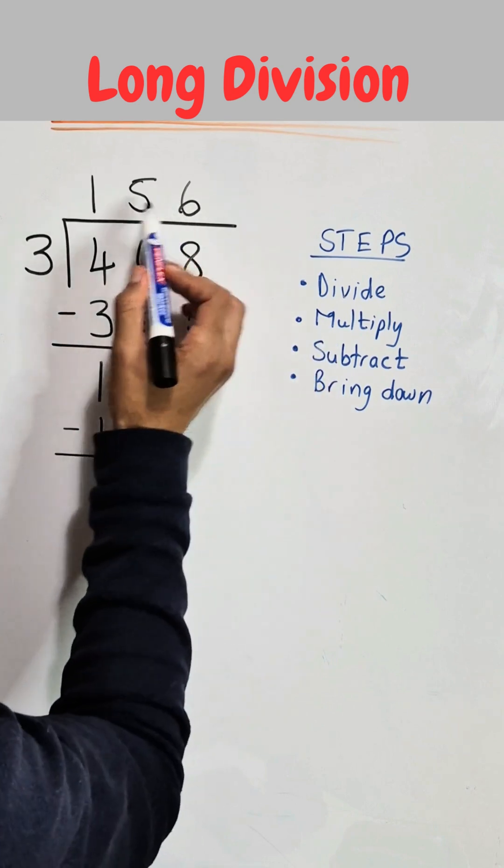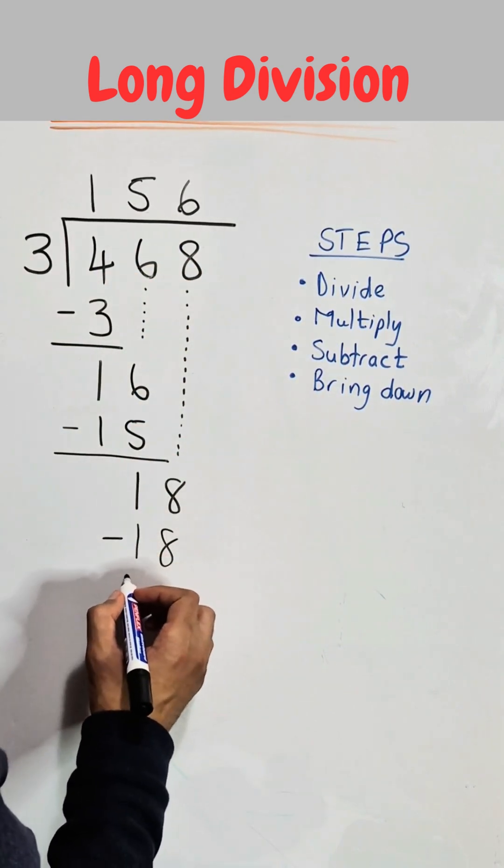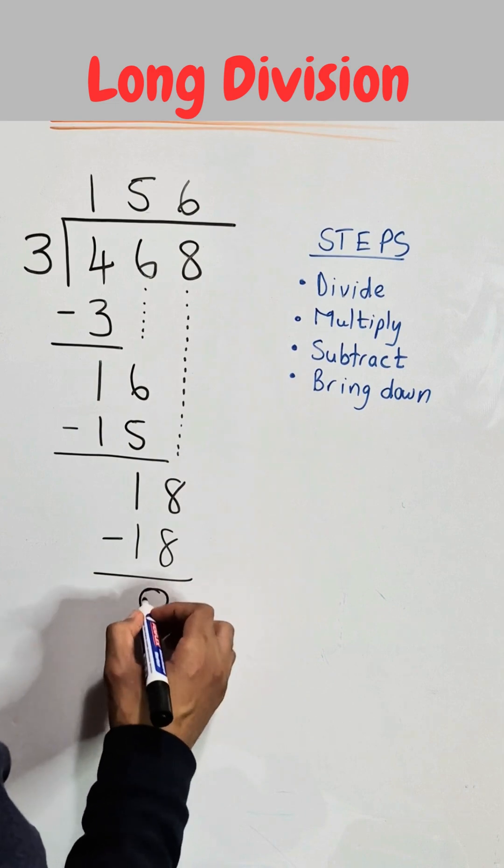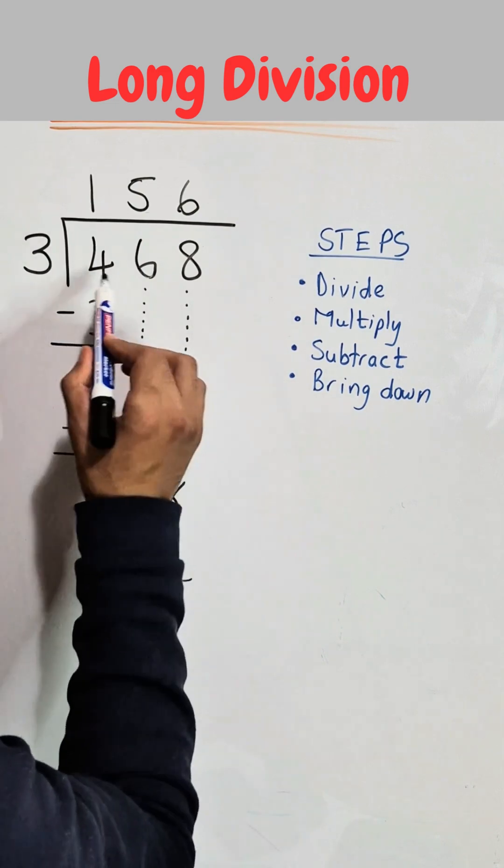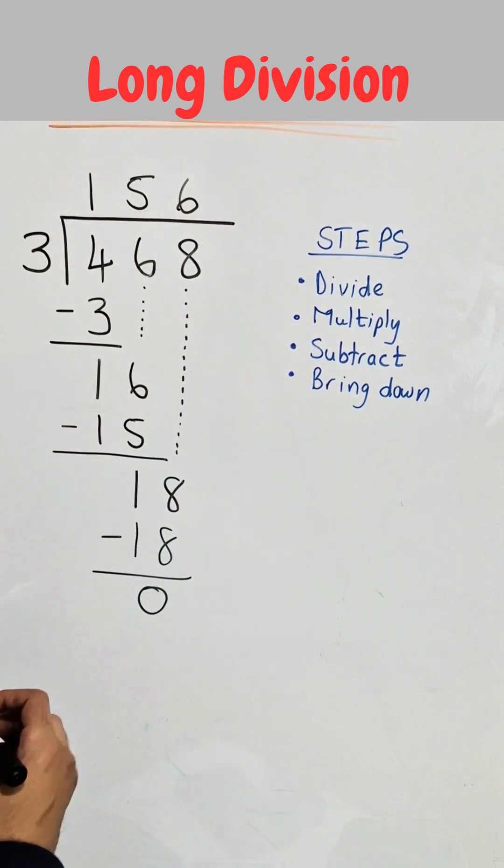Multiply the 6 multiplied by 3 which is 18. Next step is to subtract and your final answer is 0 which means that 468 divide by 3 is equal to 156.